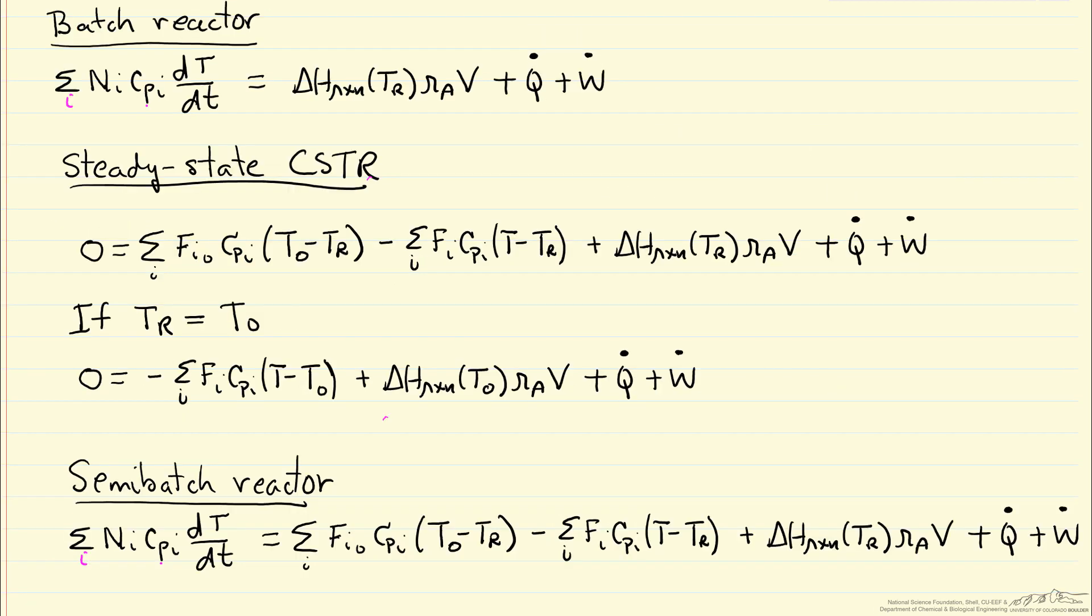So here are the equations: batch reactor, we've taken out the flow terms. A steady state CSTR, we've taken out the derivative term. Now if I pick the reference temperature equal to the feed temperature, then it simplifies and we only have the flow out term.